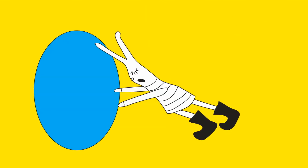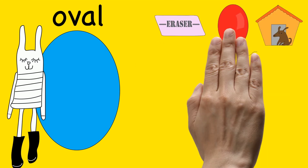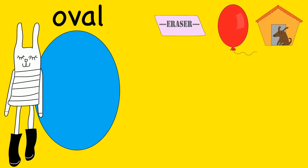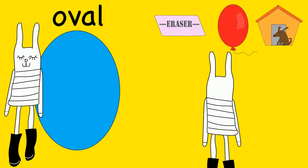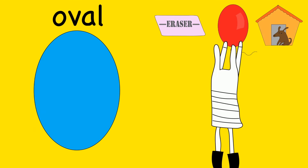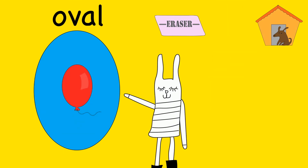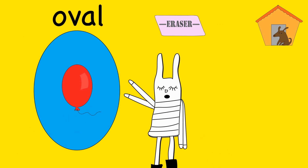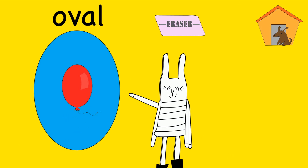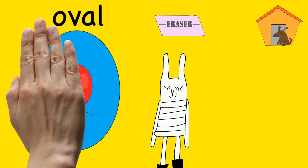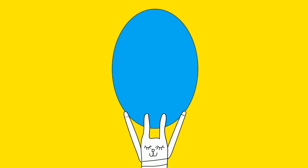I see an oval. Can you show us an object that is shaped like an oval? A balloon is shaped like an oval. Oval.